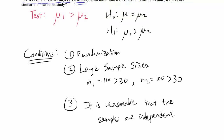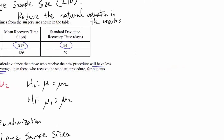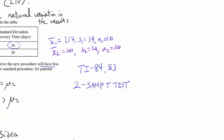Given all conditions are met, we can proceed and test our hypothesis. We are using a right-tailed two-sample t-test. Using a TI-84 or TI-83 calculator, go to the two-sample t-test and plug in the values: mean of procedure 1 is 217, standard deviation is 34, sample size is 110; mean of procedure 2 is 100, standard deviation is 29, sample size is 100. You should get t ≈ 7.127 and degrees of freedom ≈ 207.179.